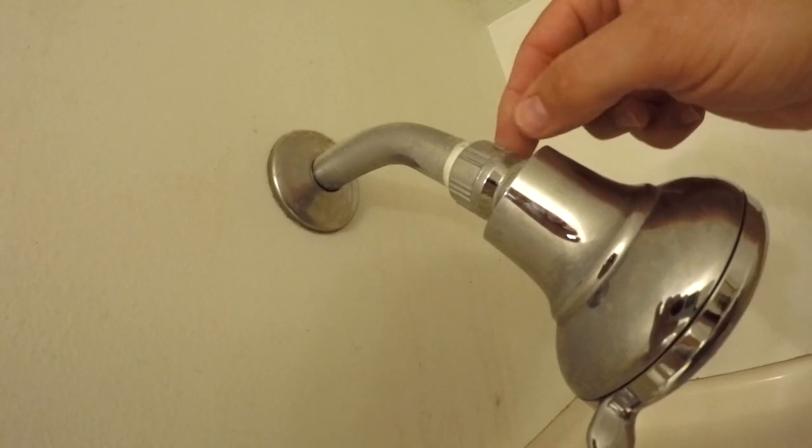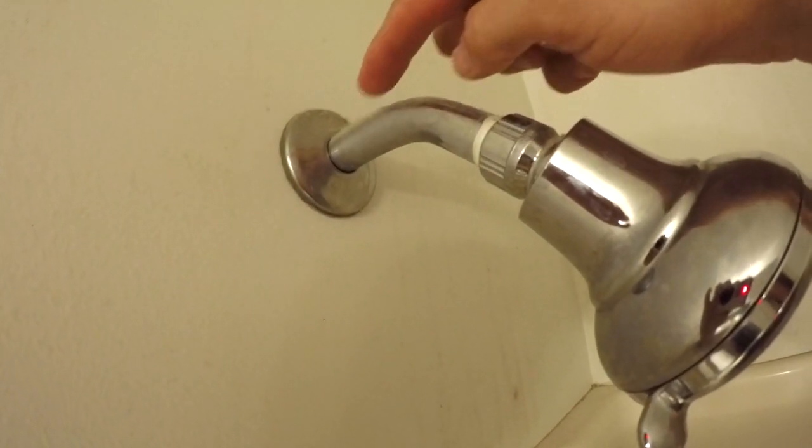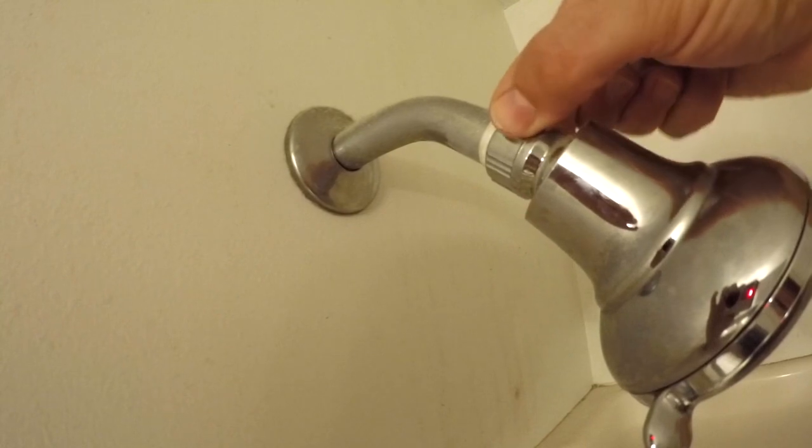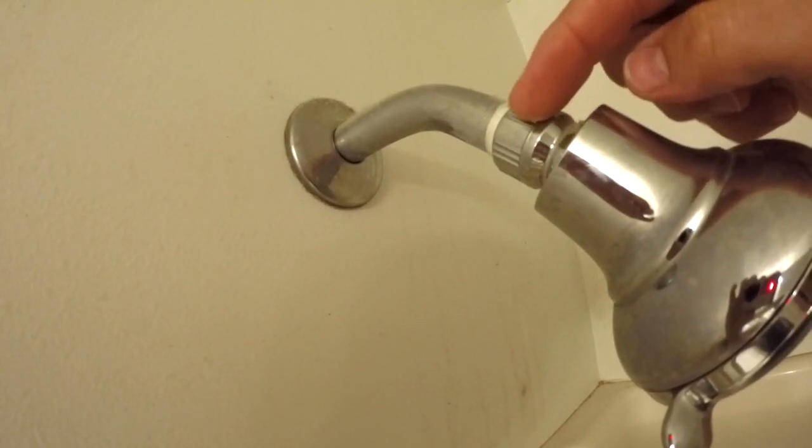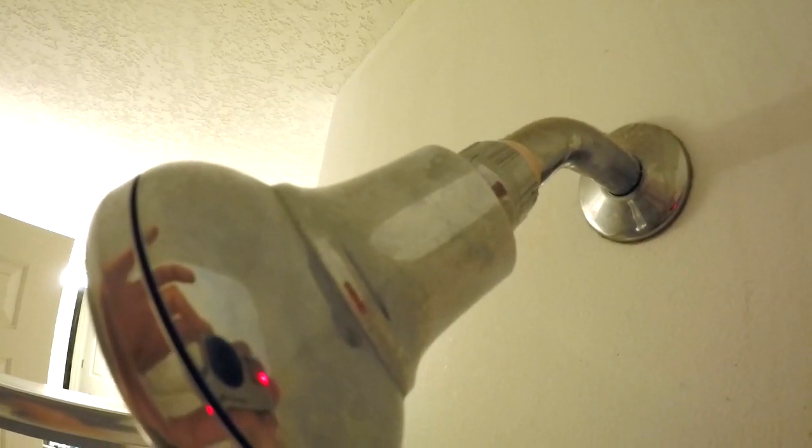This nut here or this fitting at the end of the shower head, all shower heads pretty much have them and it's a threaded nut that attaches to your shower arm. So all we're going to do is take some channel locks or some pliers and turn this counterclockwise and that will release or unscrew the shower head from the shower arm and then we can just go ahead and soak it in our white vinegar.